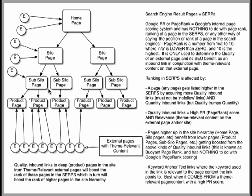The idea is to build external links into these pages — both deep links into article and product pages, and shallower links to silo pages, and also links to your home page. That's what all these little e-circles represent on the diagram.